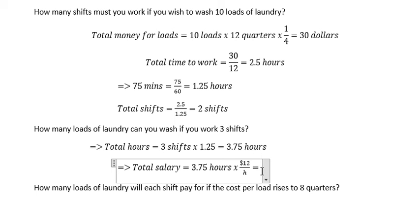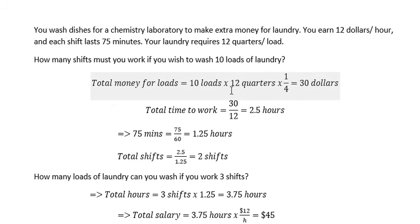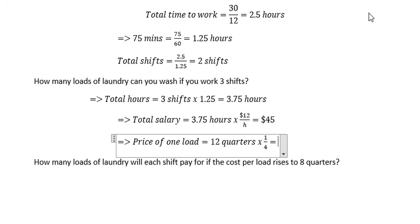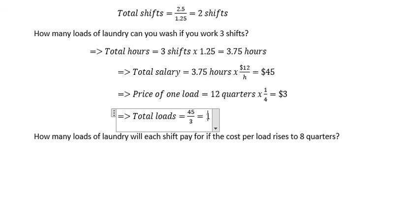Here, that's about $45. And we know that the total price of 1 load is about $3. So we calculate the price of 1 load, it's about 12 quarters multiplied by 1 over 4, you got about $3. And we can calculate how many loads in here, it's about 45 over 3, you got about 15 loads.